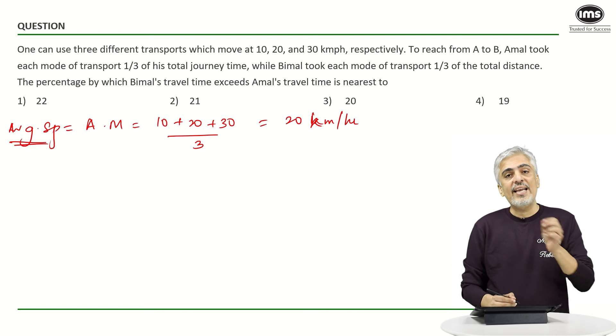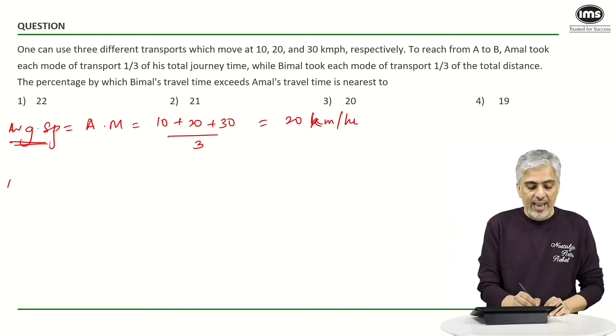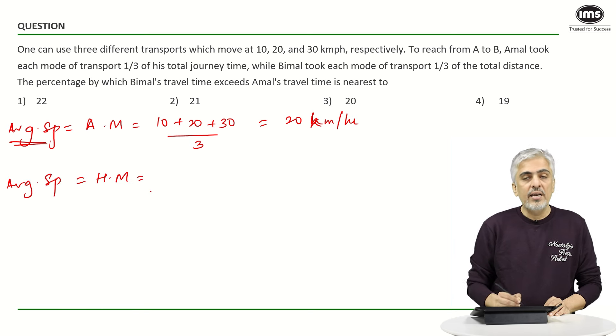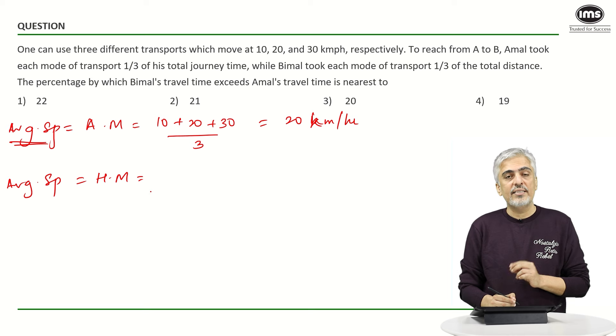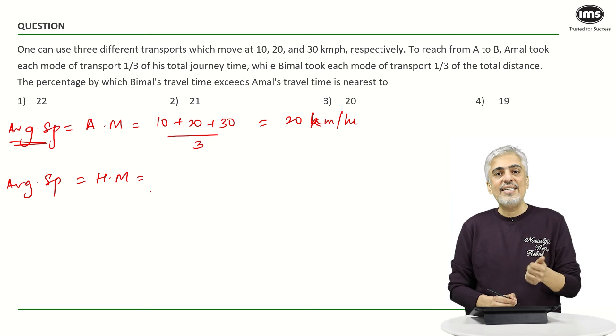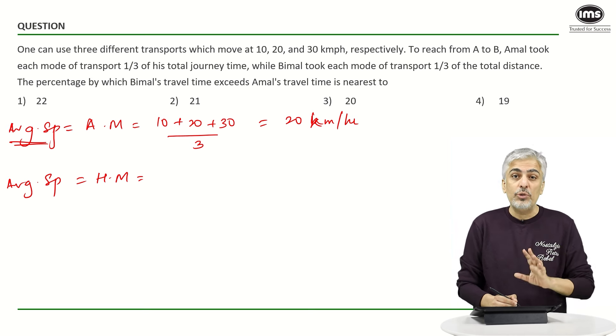Now in case 2 when the distance is constant, the average speed is harmonic mean. Harmonic mean for 3 things. You can take the distance as d, you can take it as 180. I would still prefer to take it 180.